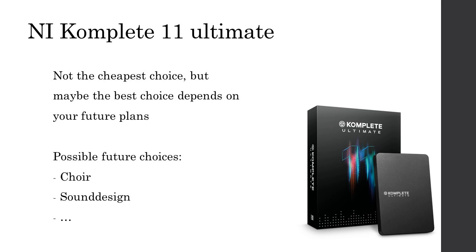My first tip continues where I left off: Native Instruments Komplete 11 Ultimate may not be the cheapest choice, but it may be the best depending on your future plans. Think about what comes after your first orchestral library — you're going to want to expand. You'll be looking at a choir, for example. Plan ahead: which choir are you going to buy, and does it require the full version of Kontakt or not? The same thing applies to sound design.